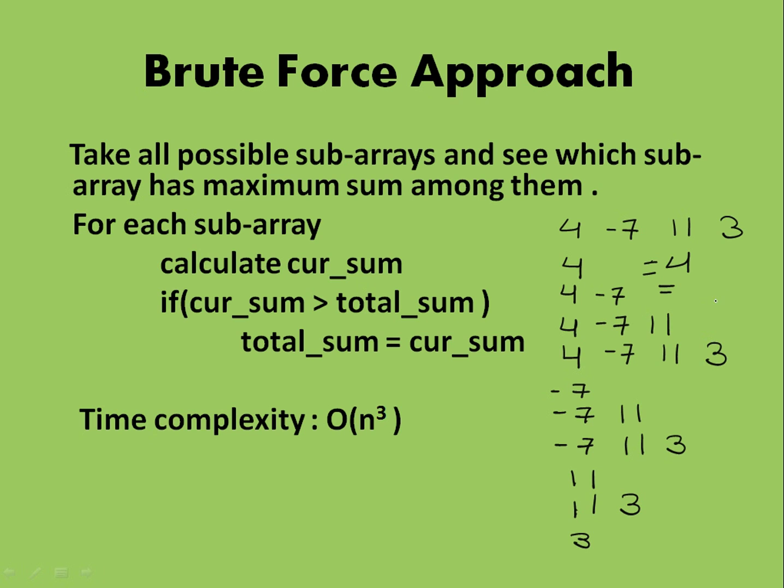If we compute this sum, then here we'll get 4 only, 4 plus minus 7, 11, 3. Here we'll get 4 minus 7, so it's minus 3, 8, 11. Here minus 7, 11, 4. Again 7, 11, 14, and 3. So out of all these, 14 is the maximum, thus this is a solution.